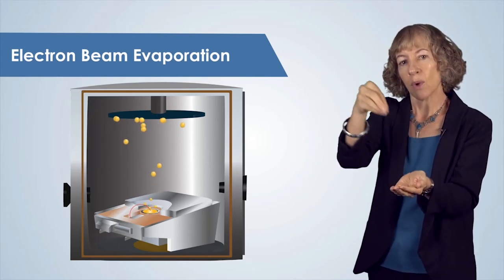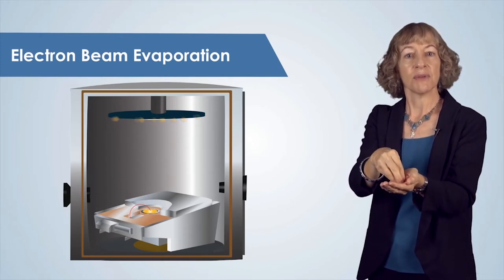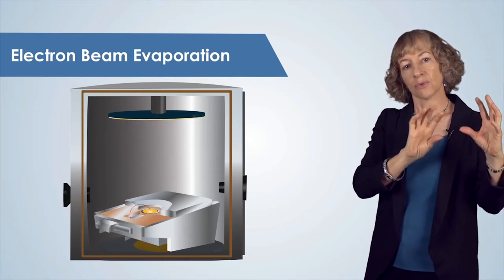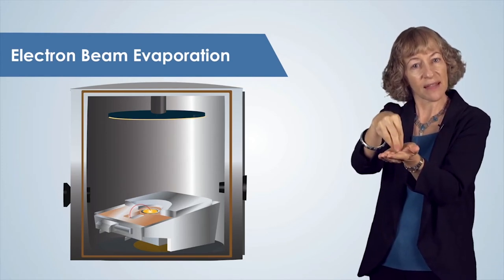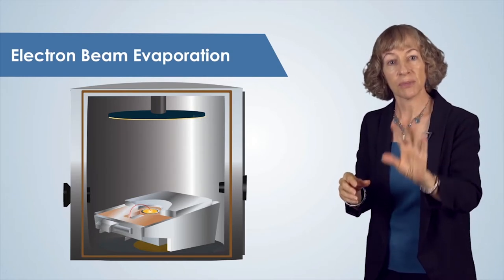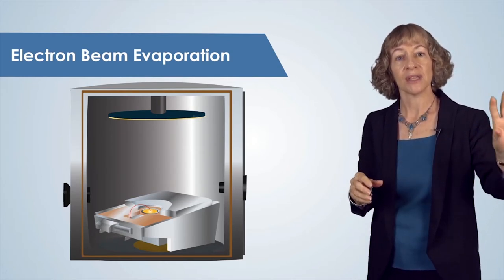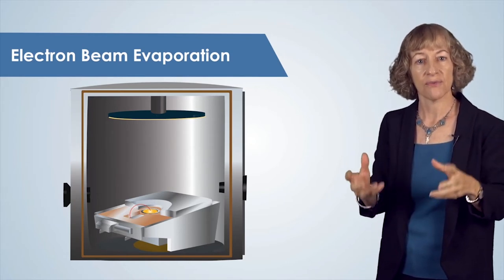This electron beam is well confined, and one of the advantages of e-beam evaporation is that we can rotate different source materials into the path of that electron beam, so that we can deposit multiple materials sequentially without opening the vacuum system, which is also called breaking vacuum or venting.